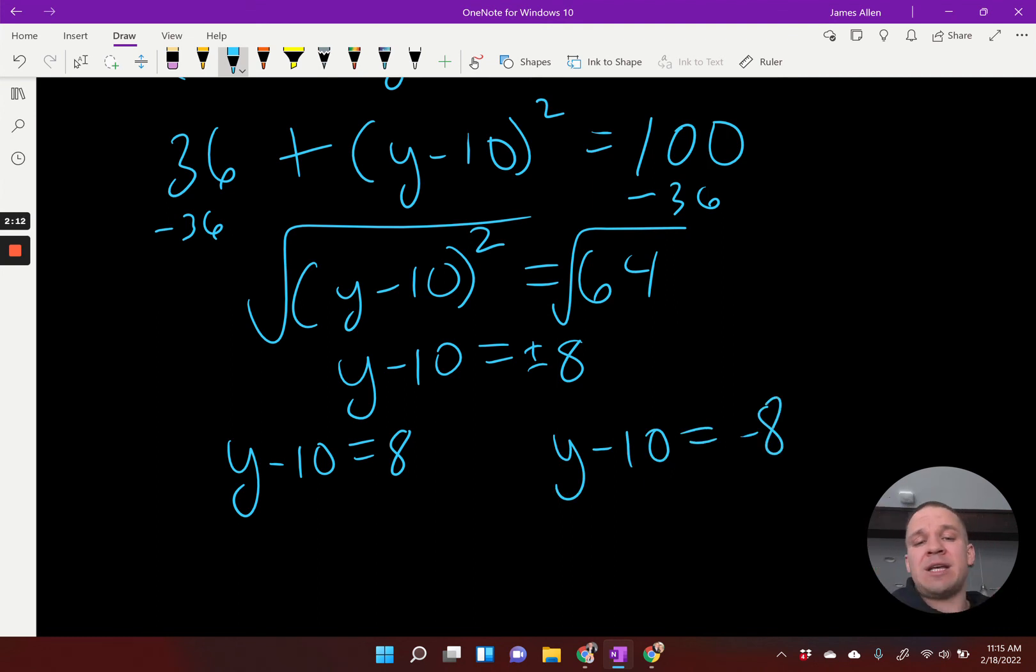Oftentimes people try to add 10 and then just think it's plus or minus 18. That's not the case. If I add 10 here to both sides, I get 18, but over here when I add 10, -8 plus 10 gives me positive 2, and those would be my two solutions.